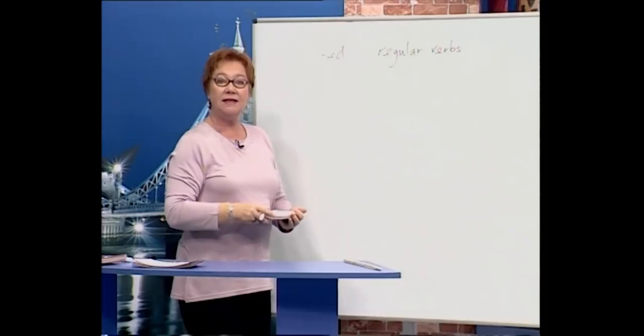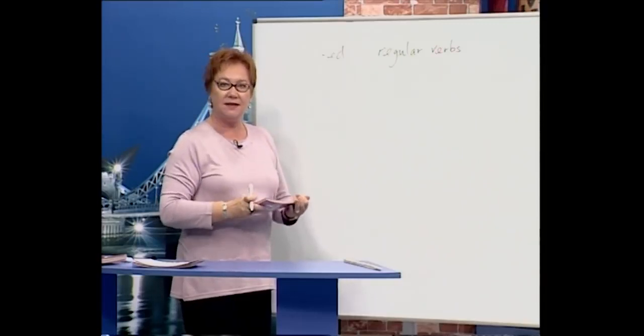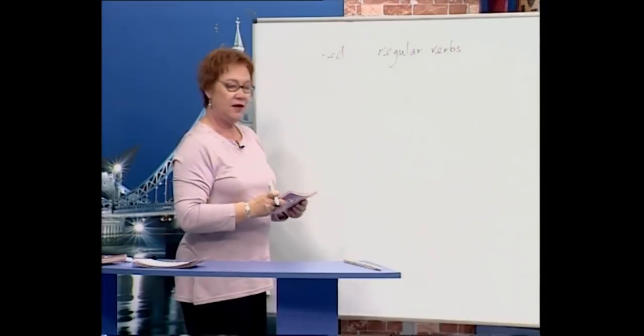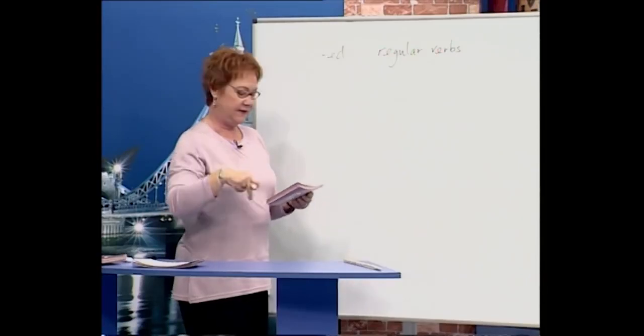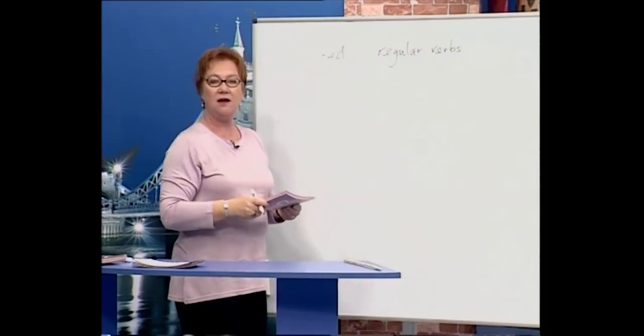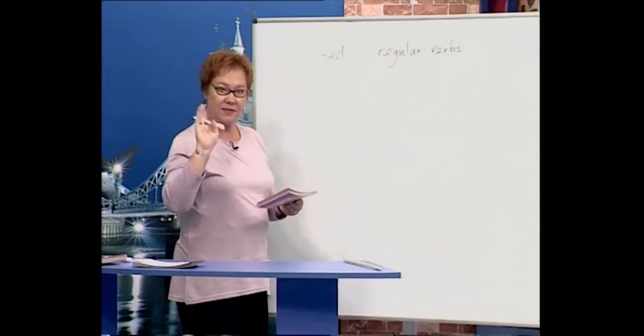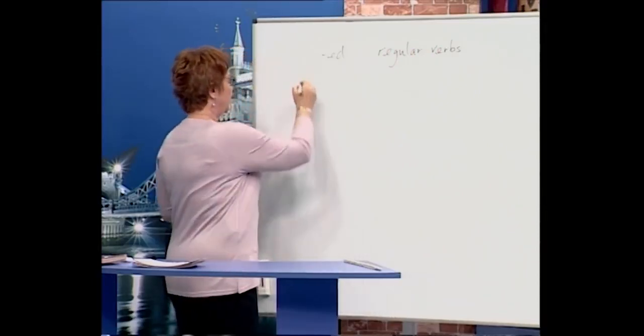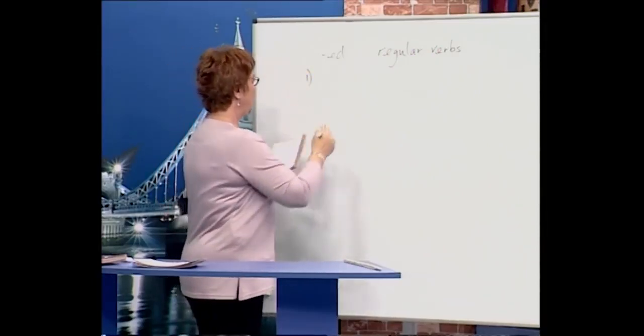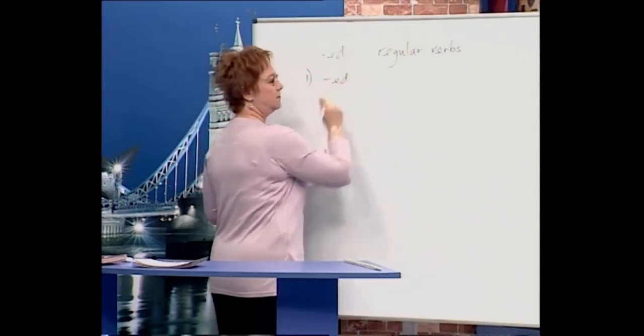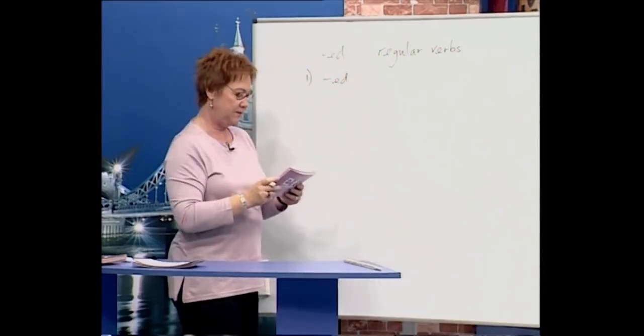Now let's look at how we spell some of the regular verbs that you already use or that you have seen in class. There are five groups of spelling rules. The first one is to add -ed, easy.